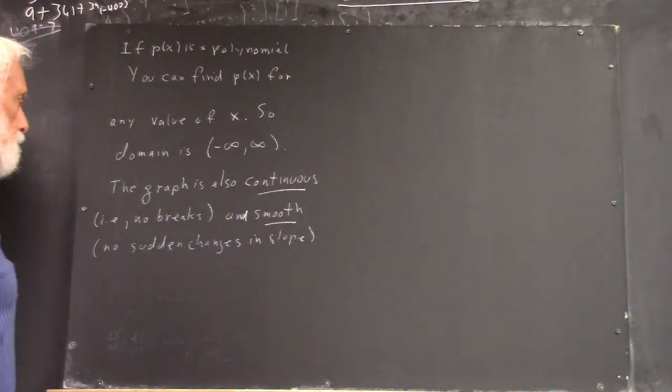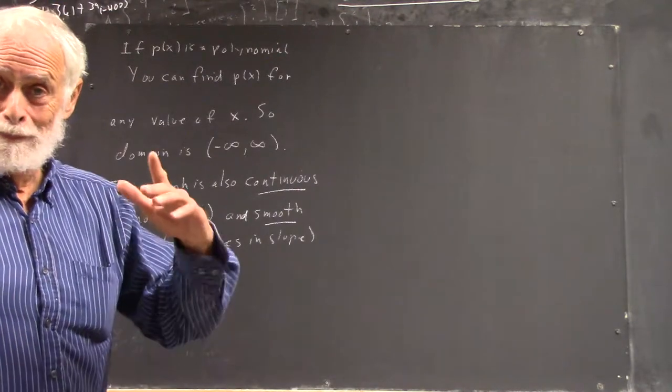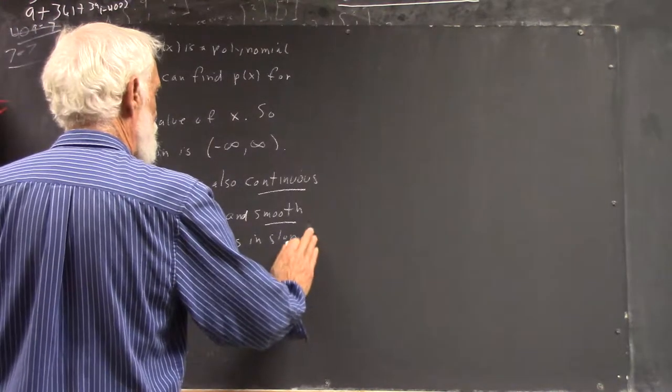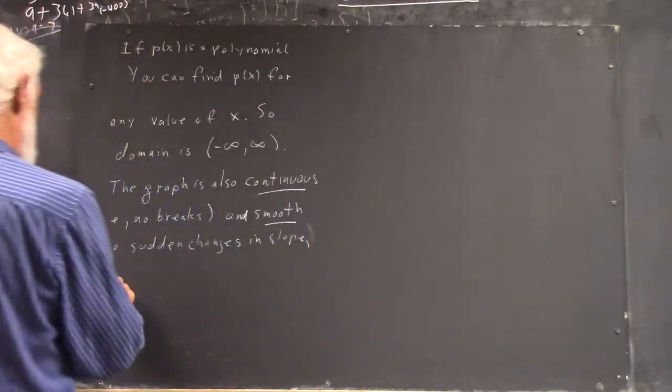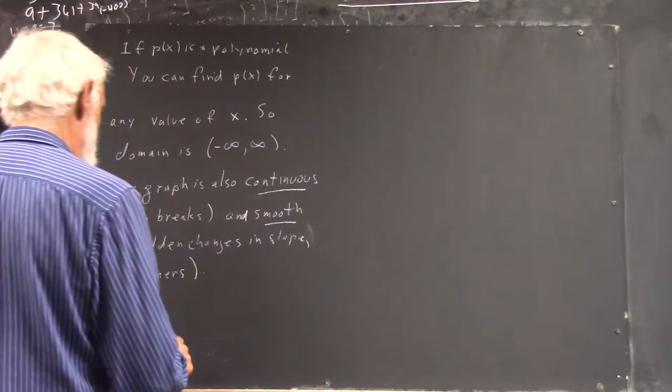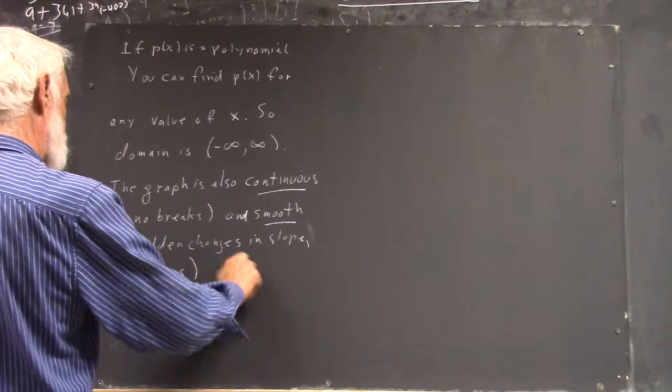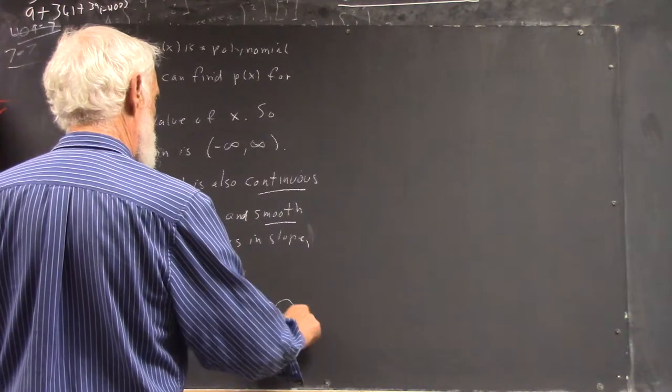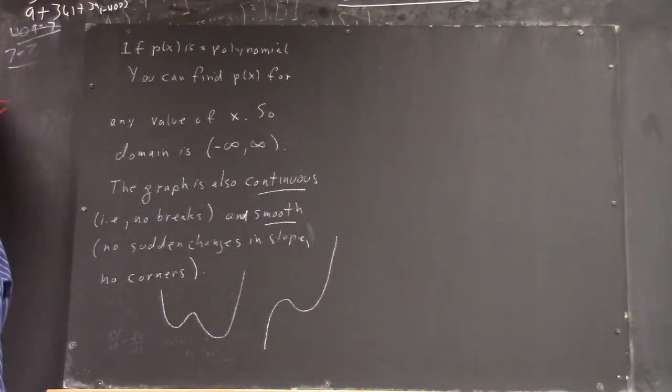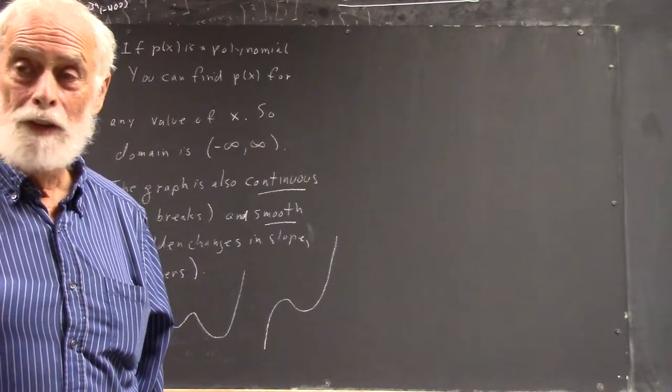Continuous and smooth, meaning no sudden changes in slope, like no corners. And we've seen what the graphs look like. They typically look something like this or like this. They're smooth.